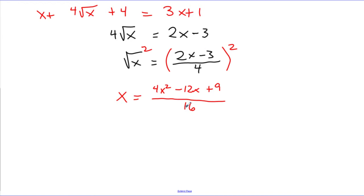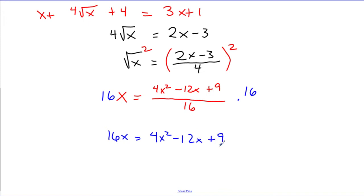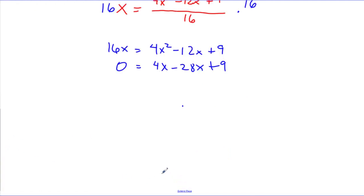Just like the last problem, I can multiply away the 16 to eliminate the fraction. That gives 16x equals 4x squared minus 12x plus 9. To set this equal to zero, I subtract 16x over, giving 0 equals 4x squared minus 28x plus 9 on the right-hand side. Now I have to solve this quadratic again. It also does not factor, so I'm going to use the quadratic formula one more time.